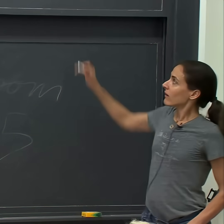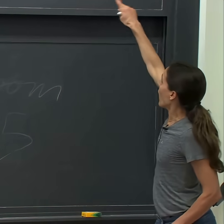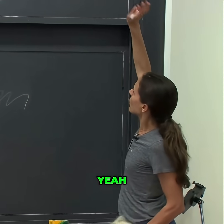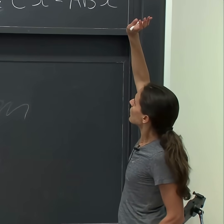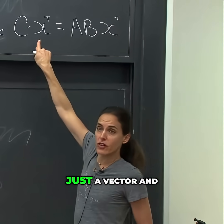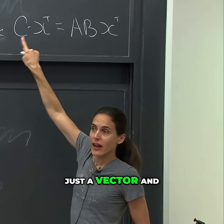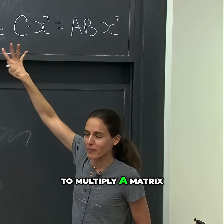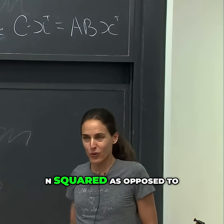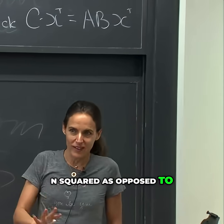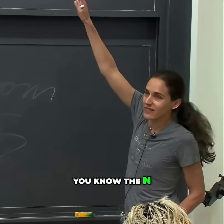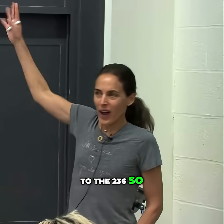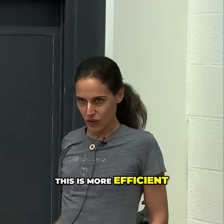Note this is just a vector. And multiplying a matrix by a vector takes time O(n²), as opposed to O(n^2.36). So this is more efficient.